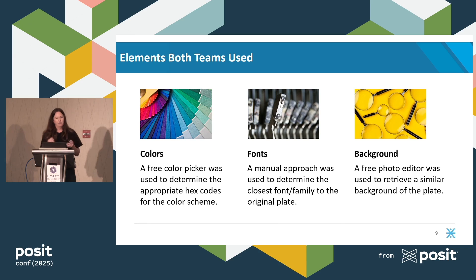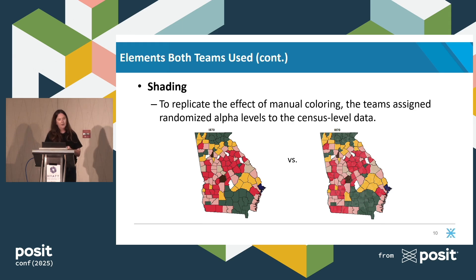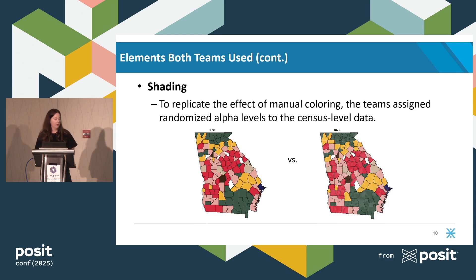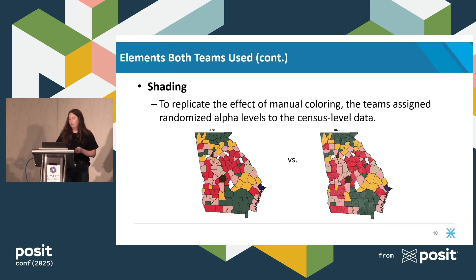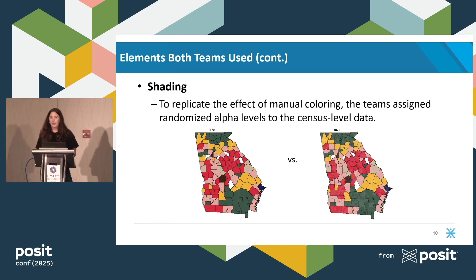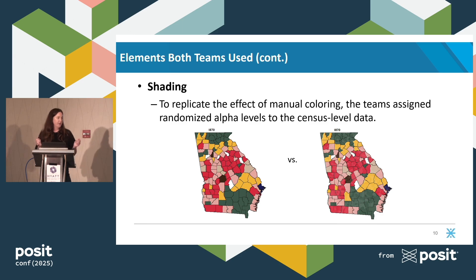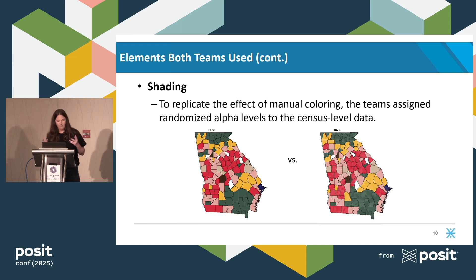It literally involved putting up the visual on the left and scrolling through fonts on the right, trying to identify what most looked like handwriting. For the background, we used a free photo editor to retrieve a similar paper-like effect. Both teams used shading in our maps to mimic that natural effect produced by the watercolors. One of our junior data scientists thought to overlay census tracts on top of the original map, and using Tigris or Pygris, both teams imported Georgia census tract data and randomly assigned each tract a transparency level — an alpha level — to mimic that shading effect from Du Bois.